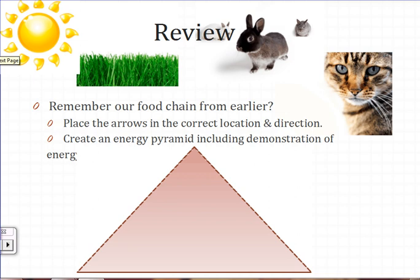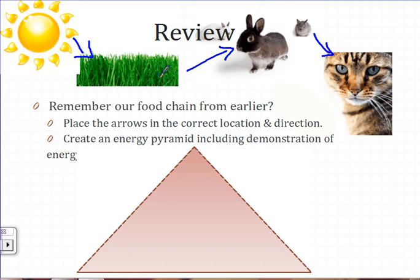Let's review. Remember our food chain from earlier? Place the arrows in the correct location and direction. Your food chain should look like this: grass gets its energy during photosynthesis from the sun; rabbits get their energy by eating the grass; and the cat gets energy by eating the rabbits. Remember, the arrows always point to the organism that is receiving energy.